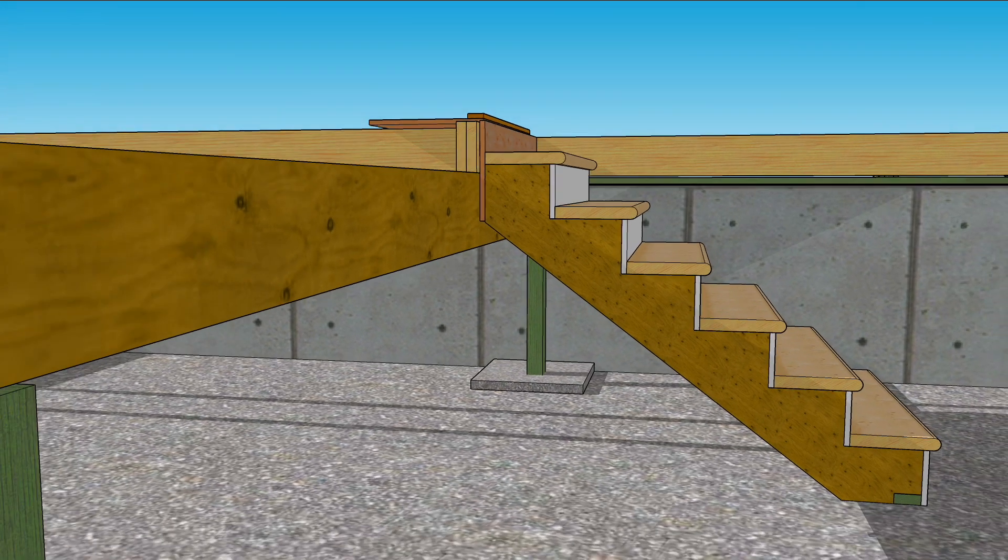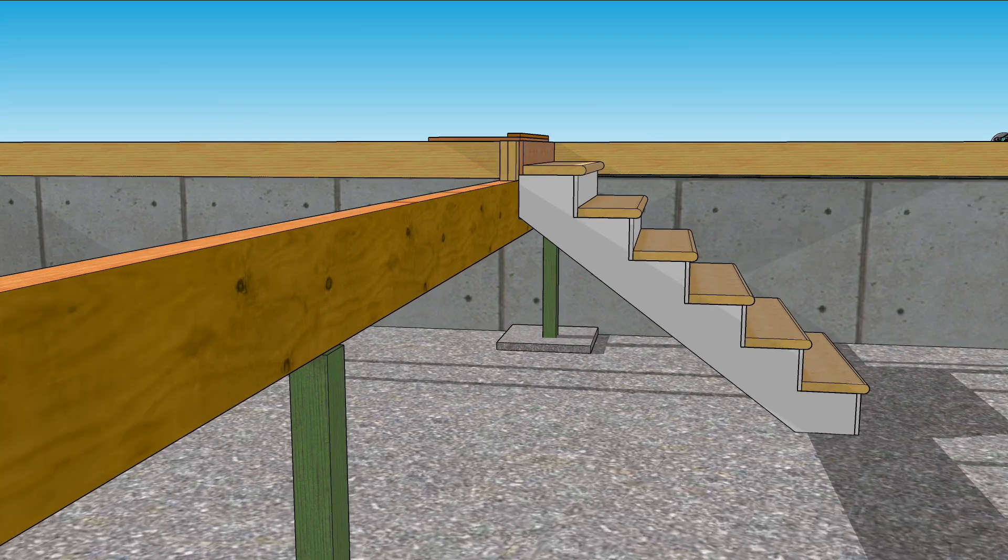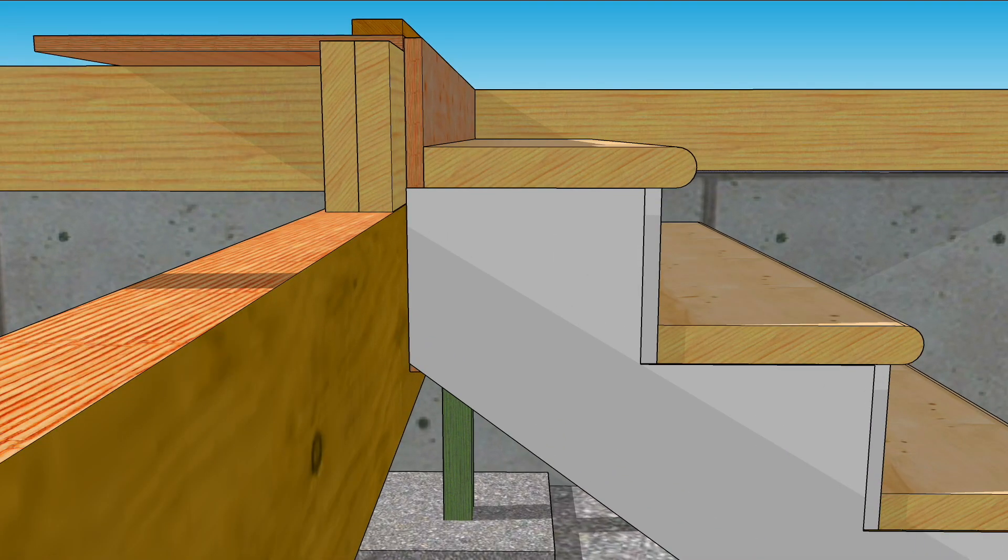But don't start cutting any wood just yet. There's still a couple things to be aware of. That last riser will be fastened to the backs of the stringers instead of to the face of the riser cut. So for this reason you need to cut the thickness of a riser off the top of the stringer.